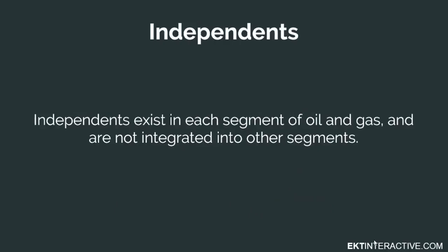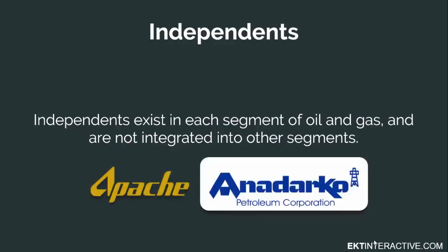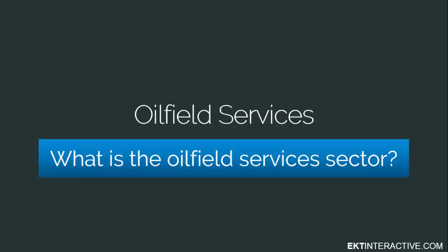Independents exist in each segment of the oil and gas industry. What makes them independent is that they are not integrated into other segments. Independents in the upstream are those E&P companies that concentrate solely on finding and producing oil and gas. Examples include Apache and Anadarko, but there are many others.